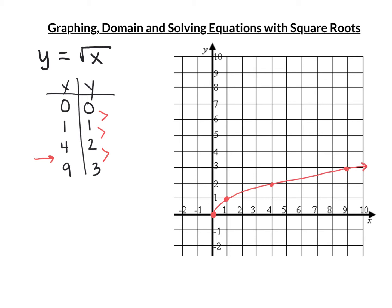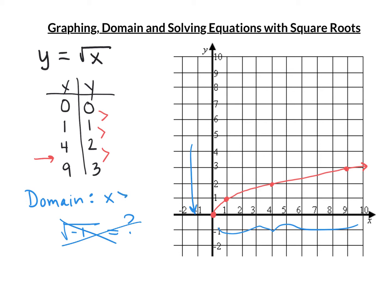When we talk about domain, remember what domain is — it's the x values you can plug in. Domain is x. When we look at the x values, we see that they're all positive. That's because I can't take the square root of a negative value; the square root of negative 1 doesn't have a real answer. So there's no way we can take the square root of a negative, which means x can never be negative. We know then that x has got to be greater than or equal to 0. It can be equal to 0 because the square root of 0 is 0.